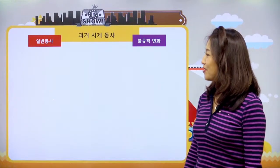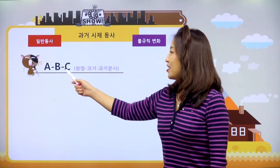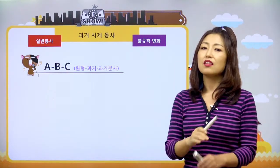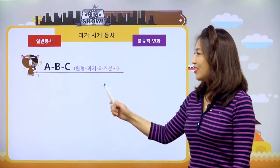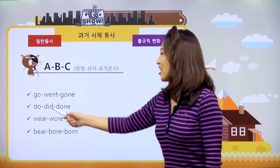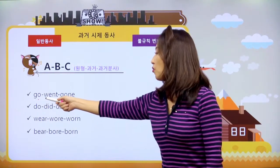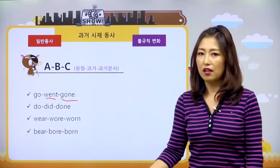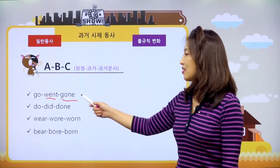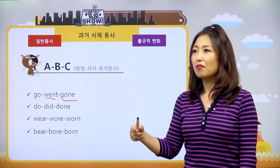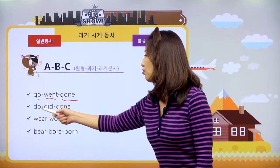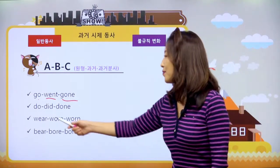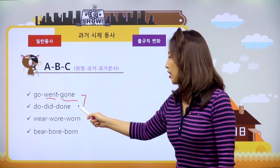다음은 ABC. 세 개가 모두 모양이 달라요. go - went/gone, 가다. do - did/done, 하다. go와 do, 비슷하죠. wear - wore/worn, 입다. bear - bore/born - 나타란 뜻이에요. 그래서 "I was born in..." 나 몇 년도에 태어났어라고 할 때 흔히 사용하는 표현이에요. drive - drove/driven, 운전하다.